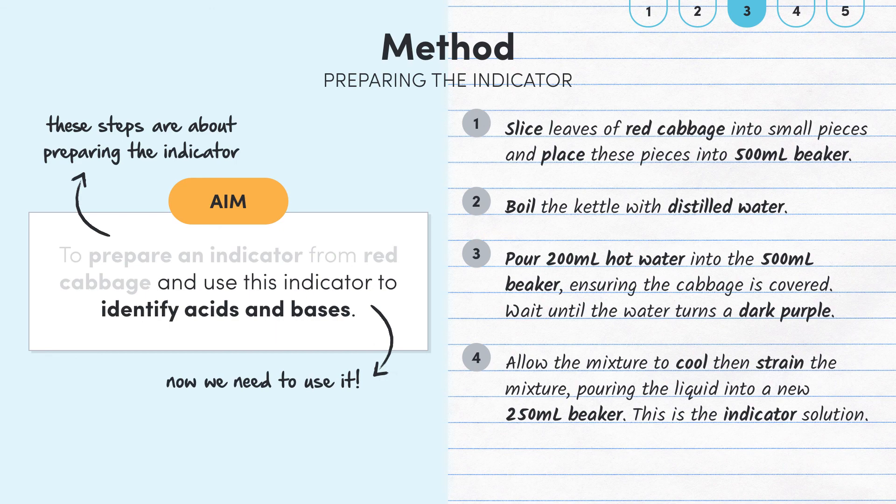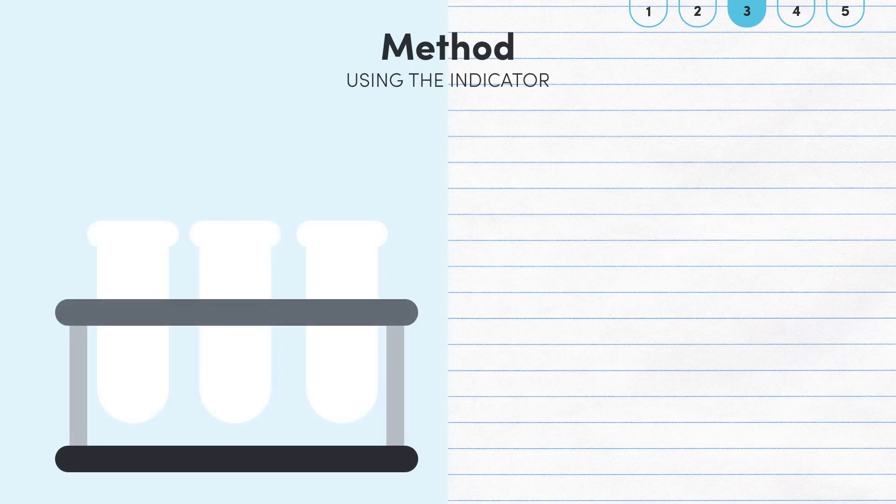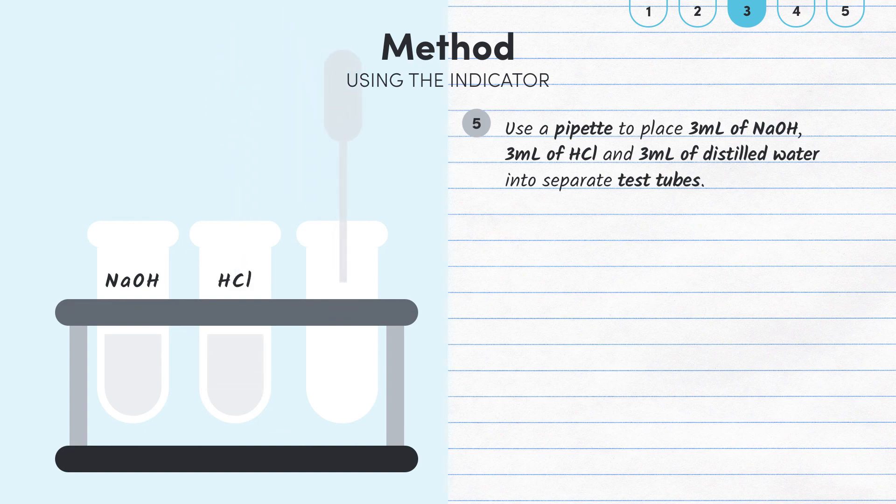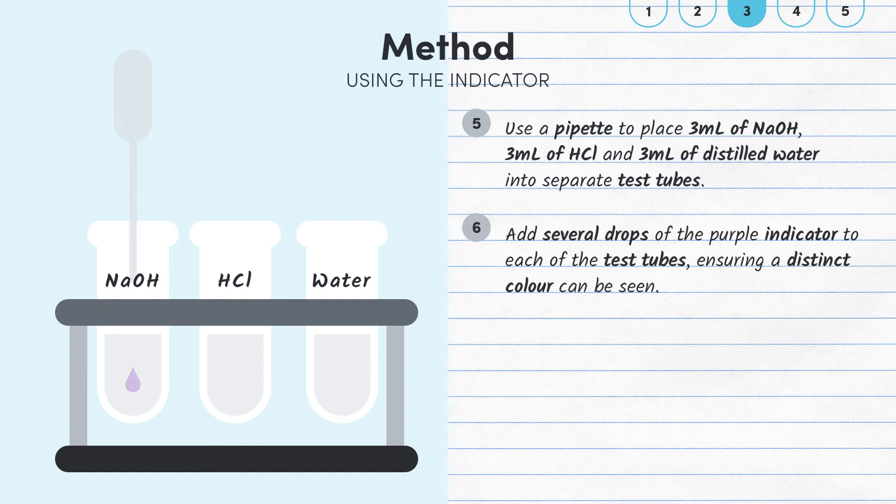But we still need to actually use the indicator to test the properties of acids and bases. So, continuing with our method. Use a pipette to place 3ml of sodium hydroxide, 3ml of hydrochloric acid and 3ml of distilled water into separate test tubes. Add several drops of the purple indicator into each of the test tubes, ensuring that a distinct colour can be seen.